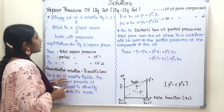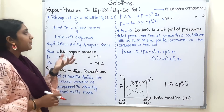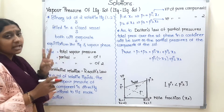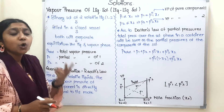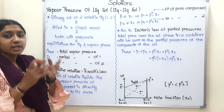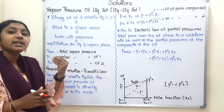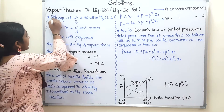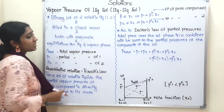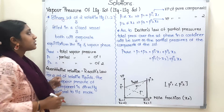Now, what we are doing: one liquid and another liquid — so there are two liquids. In total, there are two components. So what is the name of the solution? Binary solution. Correct? So we will get a binary solution.